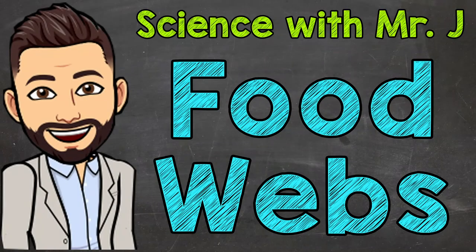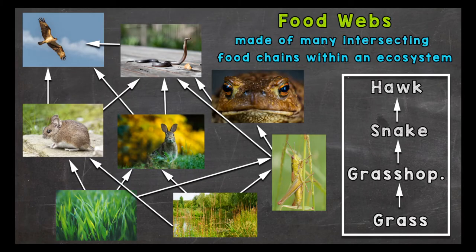Welcome to Science with Mr. J. In this video I'm going to be covering food webs. Food webs are made of many intersecting food chains within an ecosystem. Food chains are very clear-cut and are pulled from food webs. Organisms can eat multiple types of prey and there are many connections between organisms within ecosystems, so food chains don't give us the full description or representation we need for all of the organisms in an ecosystem. Food webs do this for us.